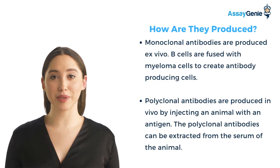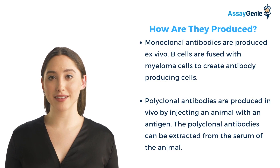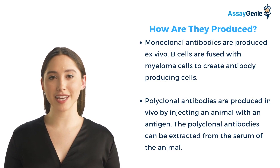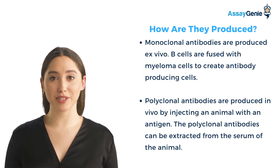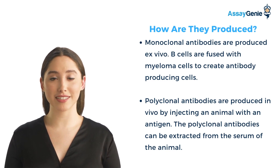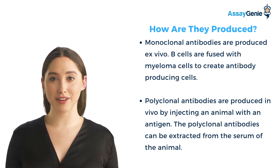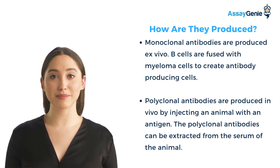Monoclonal antibodies are generated by clones of B cells that have been exposed to a single antigen. They are produced by ex vivo techniques such as tissue culturing. The process begins with an injection of an antigen into an animal such as a mouse. Once the immune response starts, the B cells are isolated and fused with a myeloma cell line.